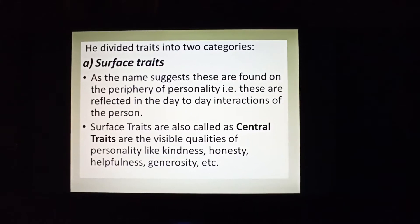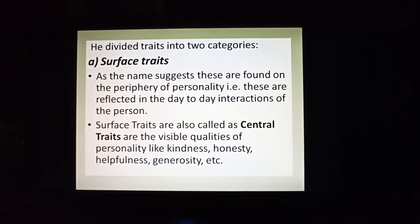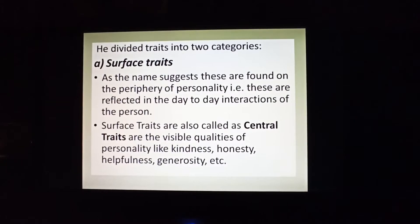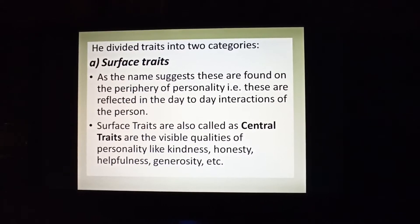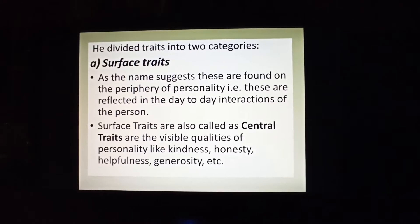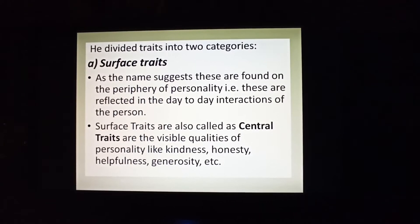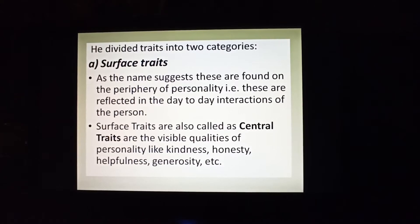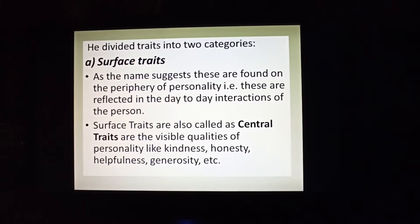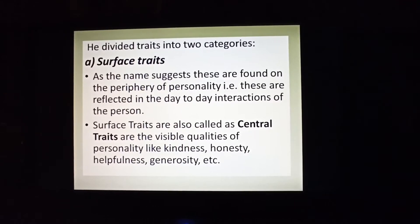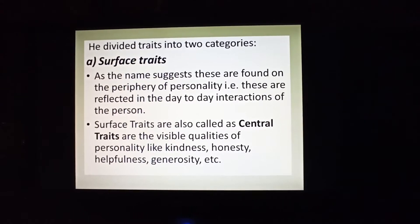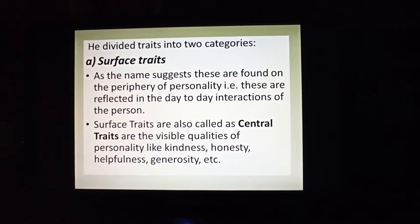So Cattell divided the traits into two main parts. The first was surface traits. Surface traits are found in the periphery of our personality. These are reflected in our day-to-day interactions — the interactions we have with people. We also call these central traits. Qualities like kindness, honesty, generosity, and helpfulness are all traits that are brought to surface traits.